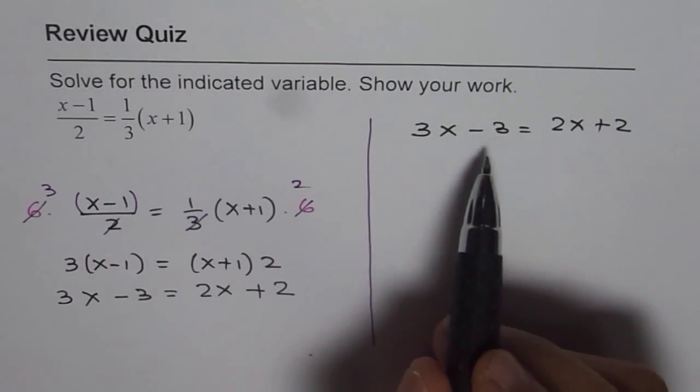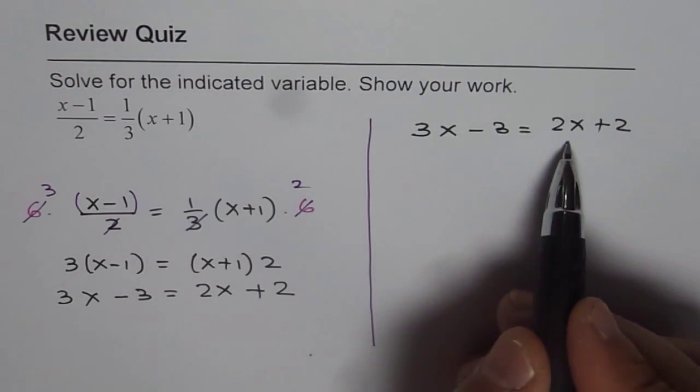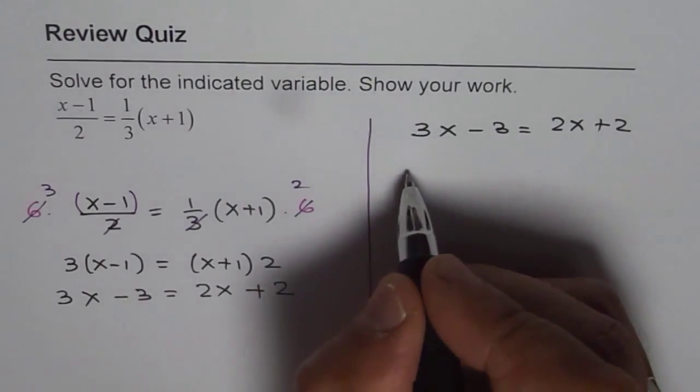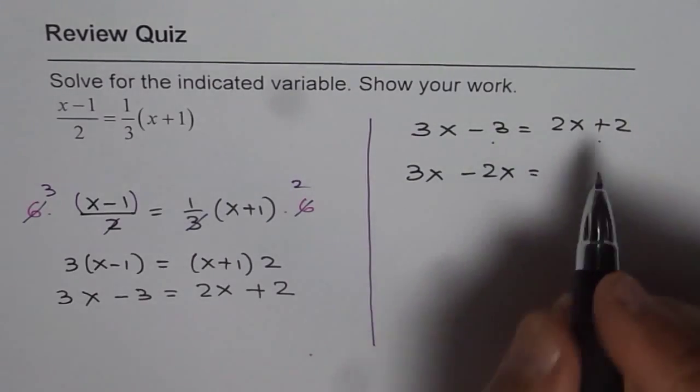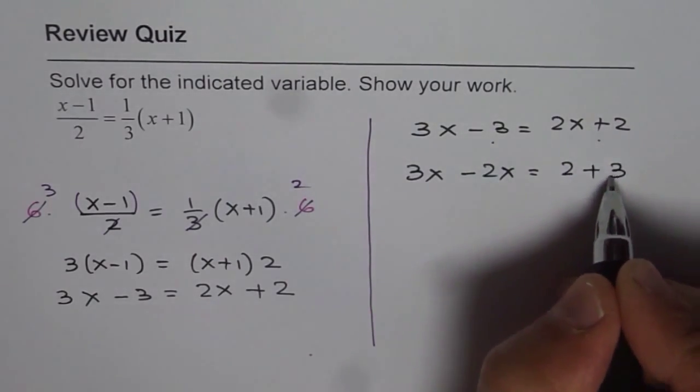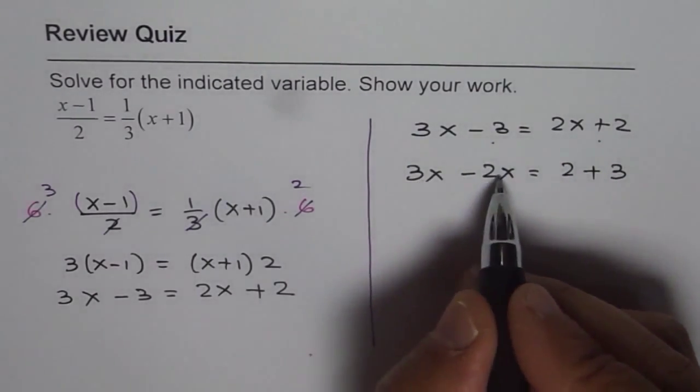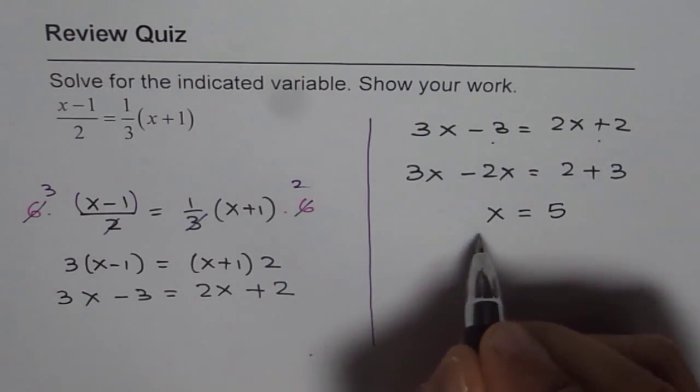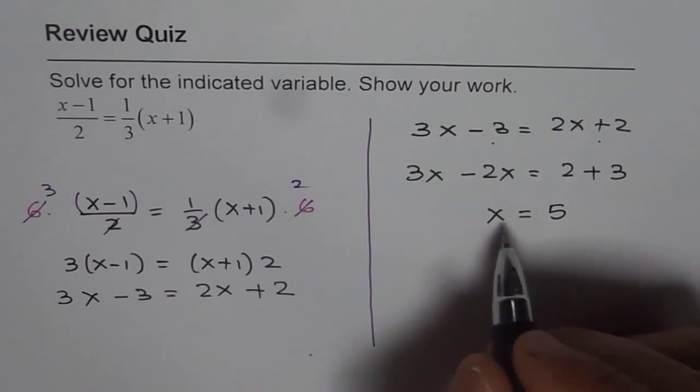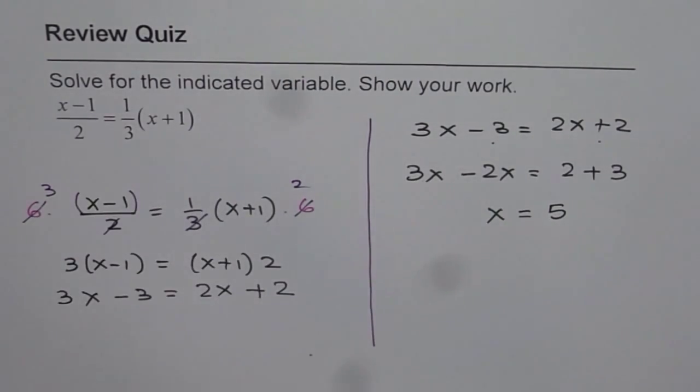To get that we will do minus 2x on both sides. So we could write this as 3x minus 2x and we will add 3 on both sides. That will result into 2 plus 3. 3x minus 2x is x and 2 plus 3 is 5. So we get x equals to 5 as the value of x in this expression.